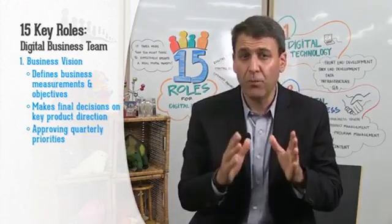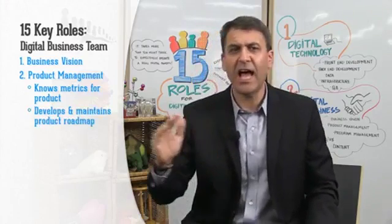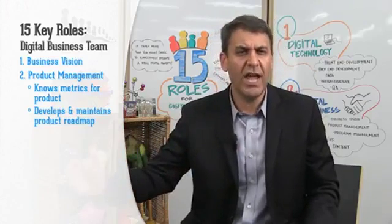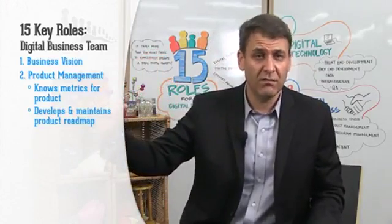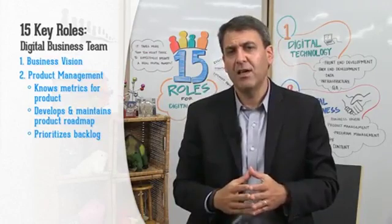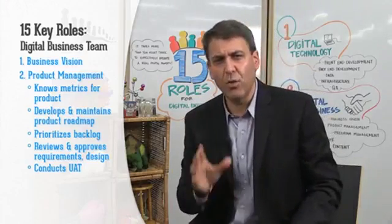This person may very likely be an executive with many responsibilities for which this digital property is only one, so they're going to rely on a team to queue up the decisions which ultimately they'll make based on that vision. The second role on the digital business team is product management — the product manager. The product manager owns that product on a day-to-day basis. They're responsible for knowing the metrics for that product and reviewing, consuming, and commissioning customer research on an ongoing basis to understand where it is and isn't working for customers. They're responsible for developing and maintaining the ongoing product roadmap.